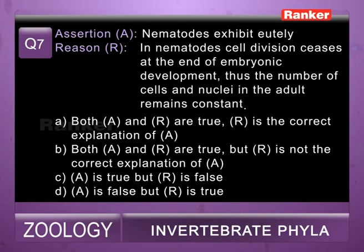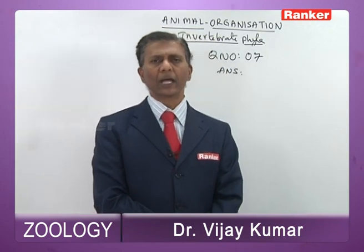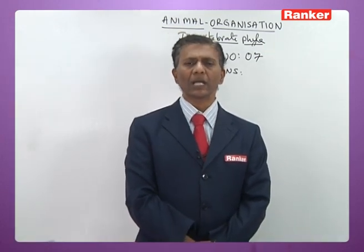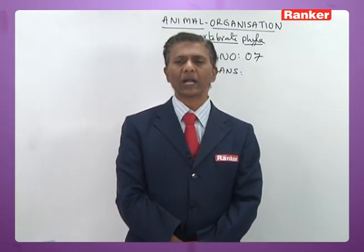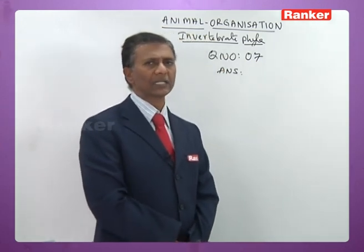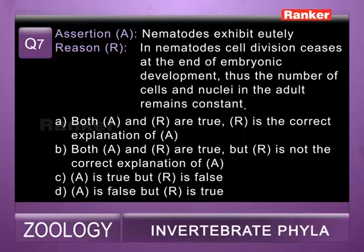Seventh question — assertion: nematodes exhibit eutely. Reason: in nematodes cell division ceases at the end of embryonic development, thus the number of cells and nuclei in the adult remains constant. Eutely means the number of cells and nuclei remains constant in any organism. Assertion is correct and reason gives the correct definition. So seventh question's correct answer is a — both assertion and reason are true and reason is the correct explanation.